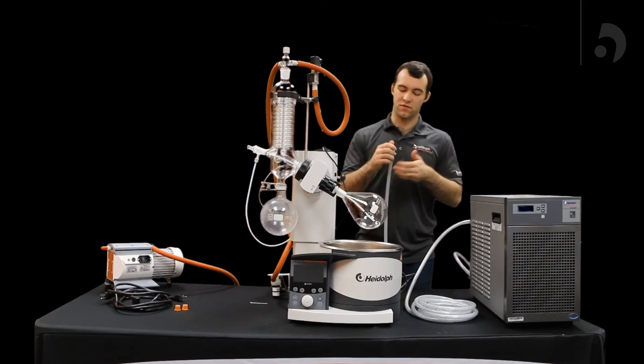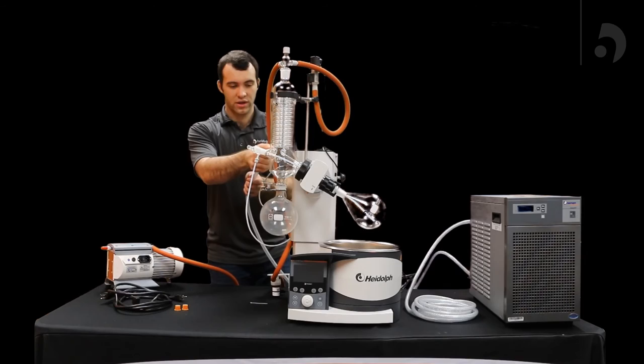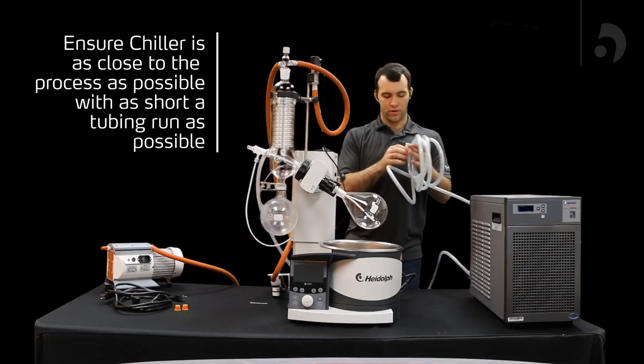Once you've got that done, there will be two ports on the back of your condenser. Screw one of them into the other. It doesn't particularly matter, at least with the G3 model. And the other hose into the other side.